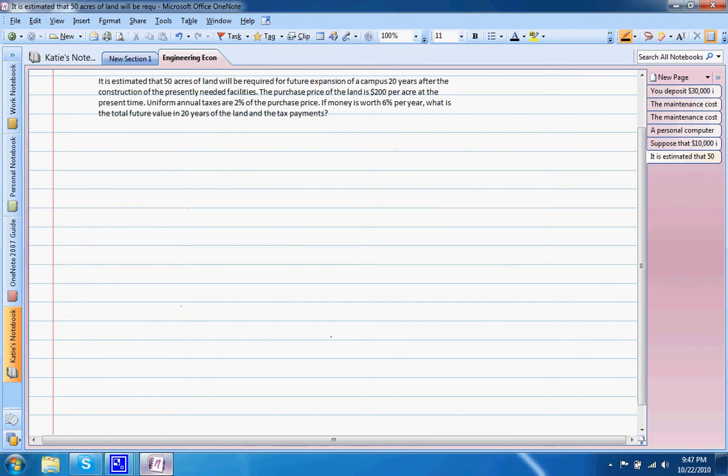So our first step, we actually need to find out the dollar value of the uniform annual taxes. We know that it's 2% of the purchase price per year. We know that the purchase price of the land is $200 per acre. So what we can do is we can solve $200 per acre times our 2% gives us $4 per acre in terms of the uniform annual taxes.